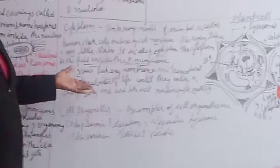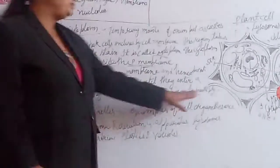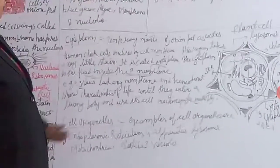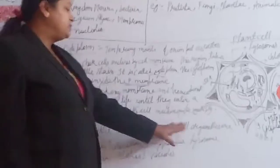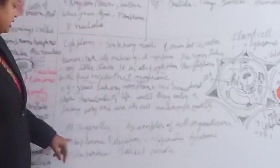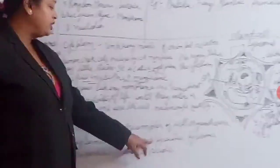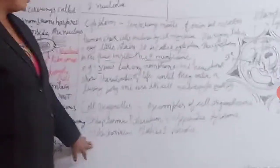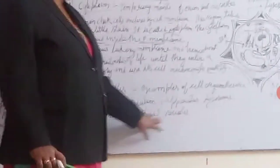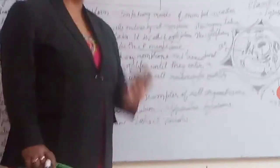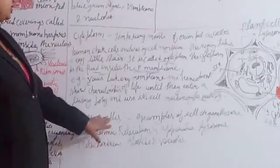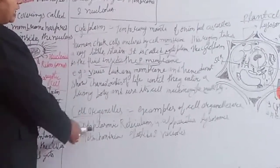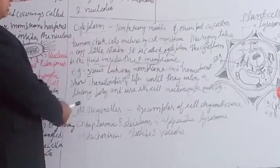Now this is about cell organelles. I have told you about organelles such as endoplasmic reticulum. We are now going to talk about the endoplasmic reticulum in detail.